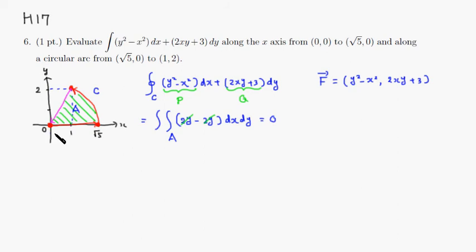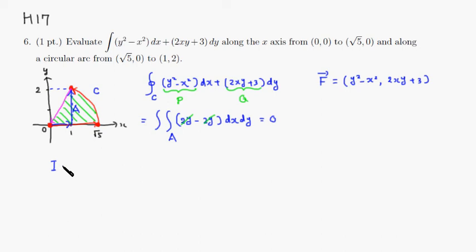So the integral I'm going to try: take a path from the origin to (1, 0) and then go straight up to (1, 2). Along the first segment there's no change in y, so we don't need the Q term. And along this path y = 0, so we can plug in 0.